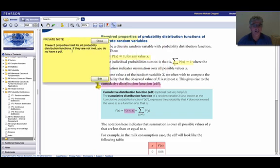And an important little note here. These two properties must hold for all probability distribution functions. And if they're not met, you don't have a PDF.